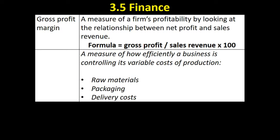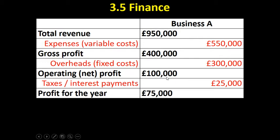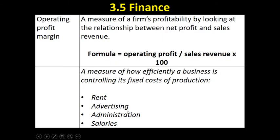The operating profit margin is perhaps the main measure of a firm's profitability because it takes into account total costs — both variable costs of production plus fixed costs of production. Operating profit is total revenue minus variable costs and fixed costs, showing how much money is left. This is really the primary efficiency measure: how effective is a business at controlling all of its costs.